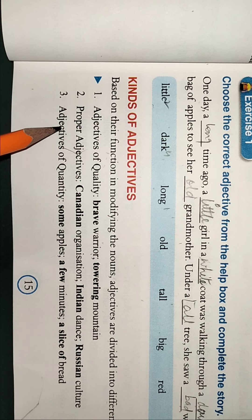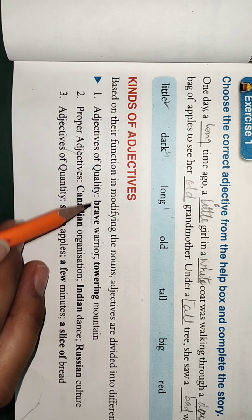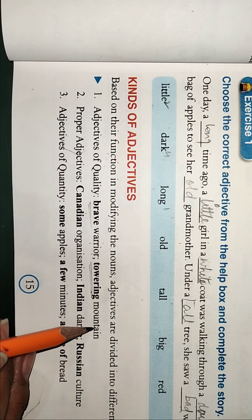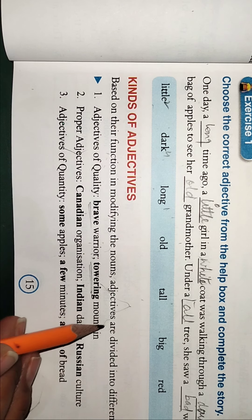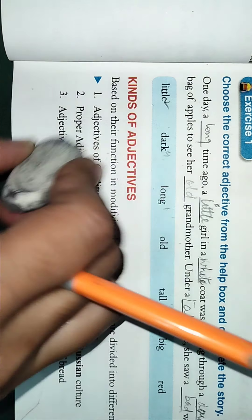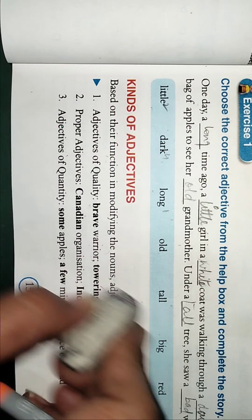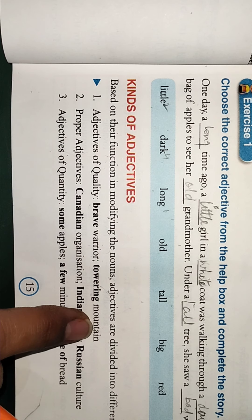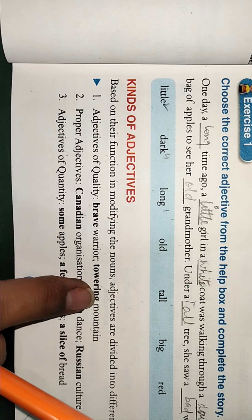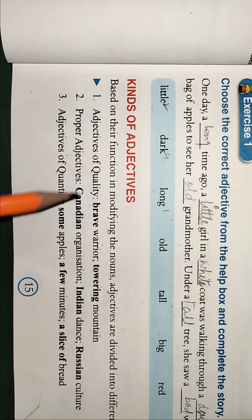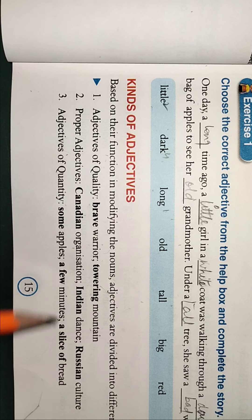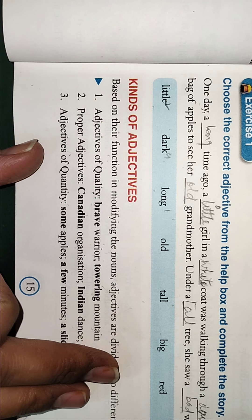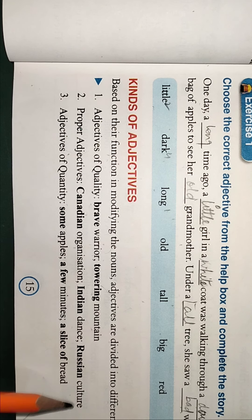For example, what are adjectives of quality? It tells about the quality of something, quality of a noun. What type of warrior? Brave warrior. What type of mountain? Towering means it is describing, typically complete description of the noun, so it is the proper adjective.